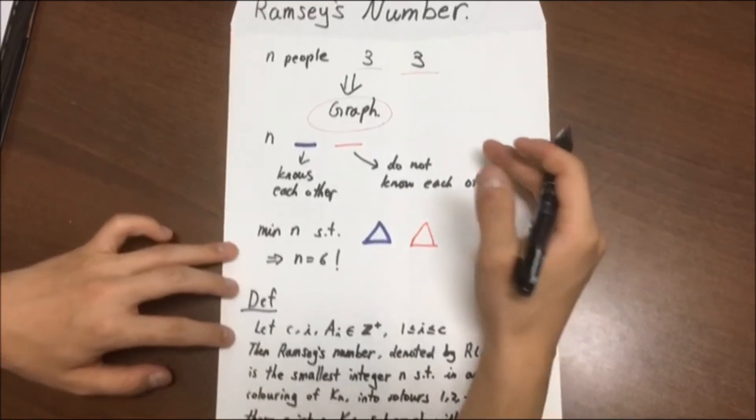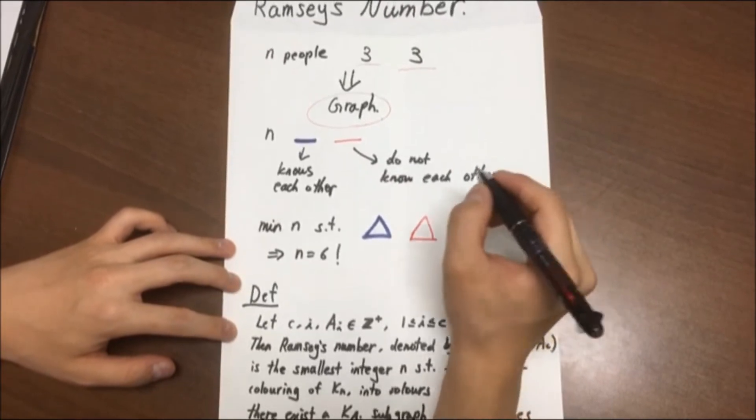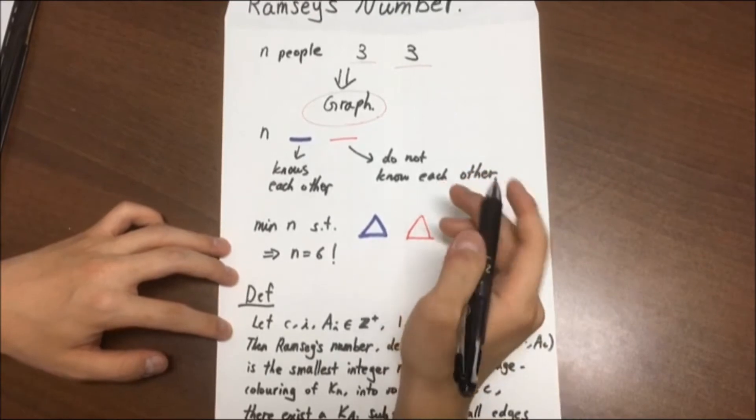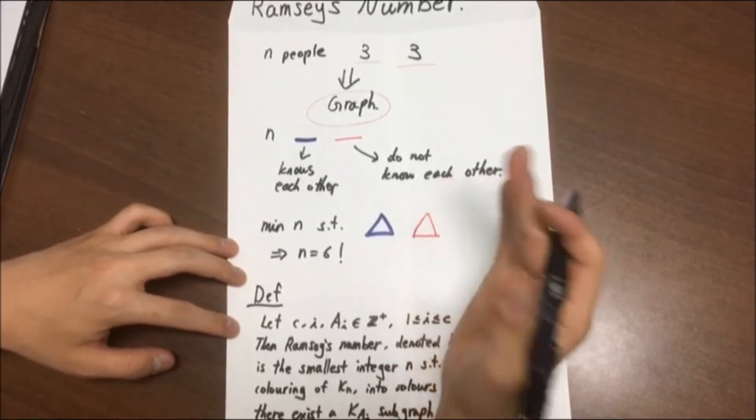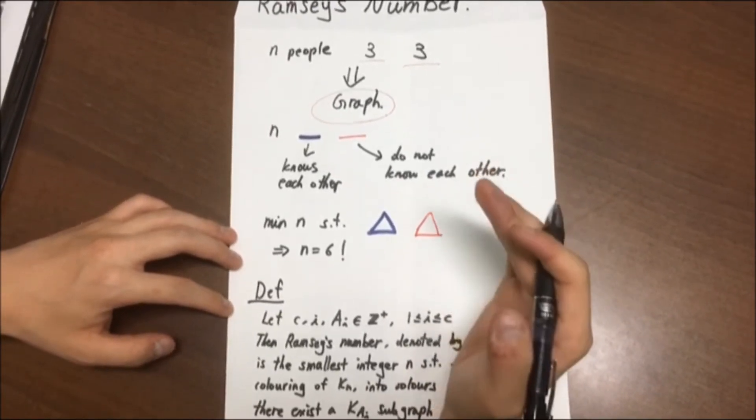and those that are connected by a red edge are equivalent to two people who do not know each other. Then, what is the smallest possible positive integer N such that there is a monochromatic triangle? That is, there is a triangle with all edges colored either by red or blue. Well, as we learned from our class, we know that the answer is 6.